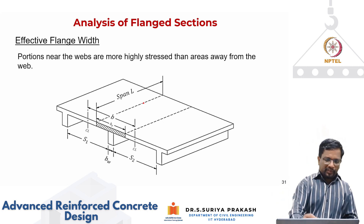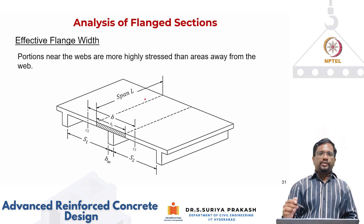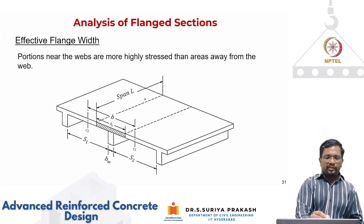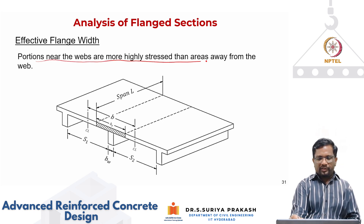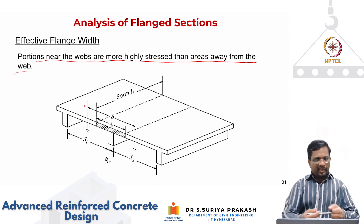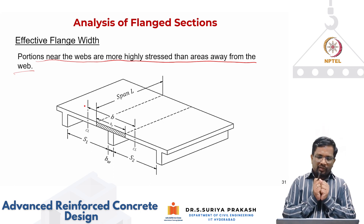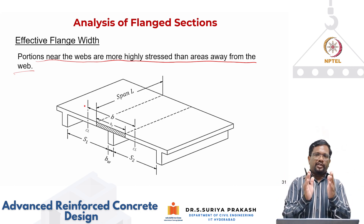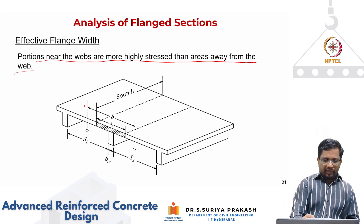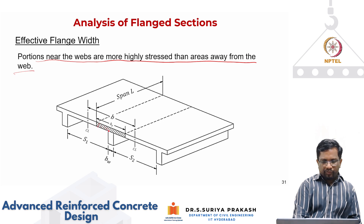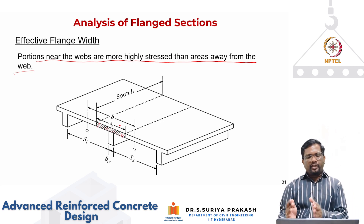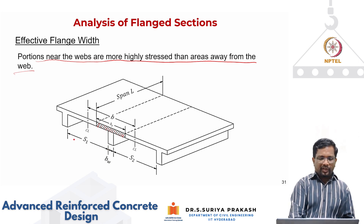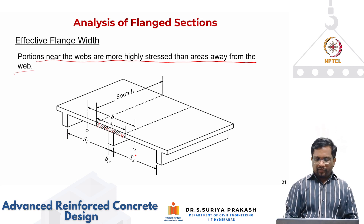The code asks you to consider only a portion of the flange width that is effective in resisting the applied bending — the effective flange width. Portions near the web are more highly stressed than areas far from the web, so there is a transverse distribution of stresses. The flange close to the beam at the top offers more resistance. The code says you do not need to account for this variation; instead, you use the effective flange width in your calculations.